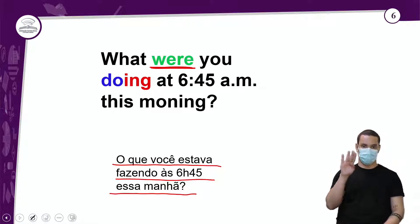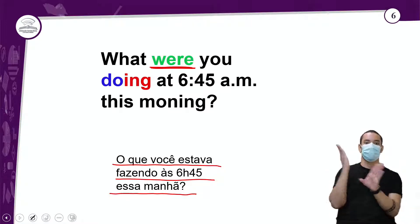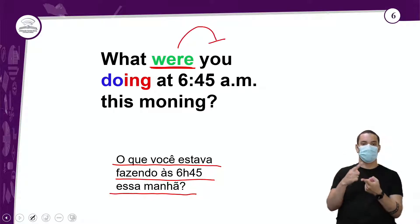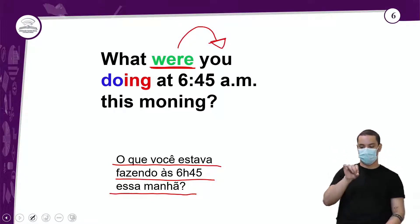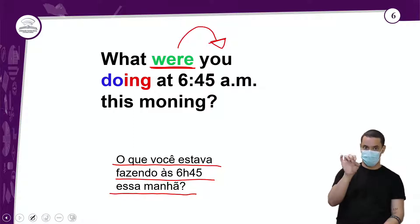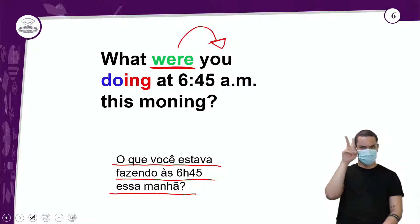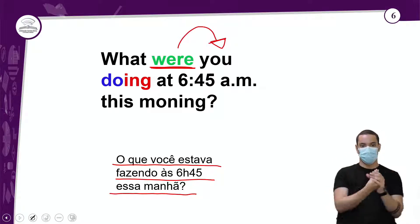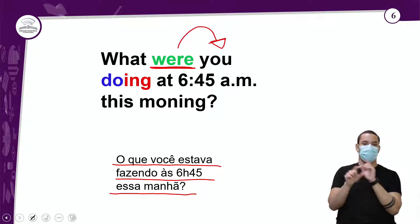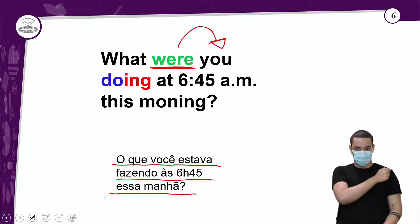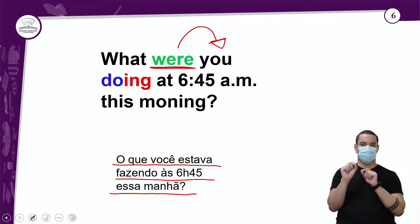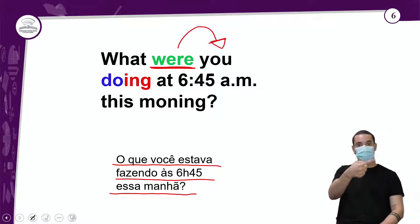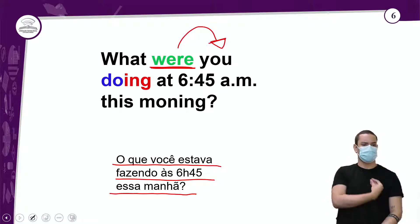Eu usei 'were' porque estamos falando do 'you'. E esse 'you' pode ser tanto você quanto vocês — é o mesmo pronome pessoal para duas situações, plural e singular. Aqui, como a pergunta é feita para vocês alunos: 'What were you doing?' — O que vocês estavam fazendo?